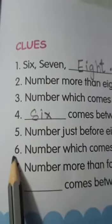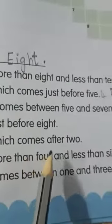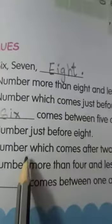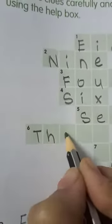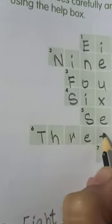The sixth one is, number which comes after 2. What comes after 2? 3. The spelling of 3 is, T, H, R, E, E. 3.